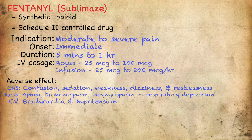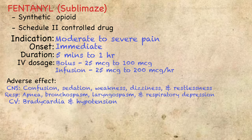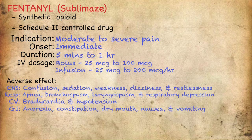For the cardiovascular system, fentanyl can cause bradycardia and hypotension. Like other opioids that can reduce adrenergic tone, fentanyl can cause vagus nerve-mediated bradycardia, in addition to vasodilation and decreased sympathetic tone, which can cause hypotension. For the gastrointestinal system, it can cause anorexia, constipation, dry mouth, nausea, and vomiting, due to activation of chemoreceptors in the gastrointestinal tract and GI motility suppression.